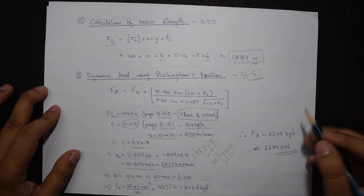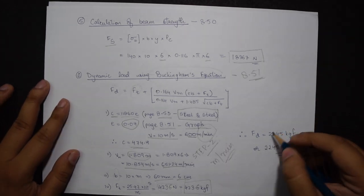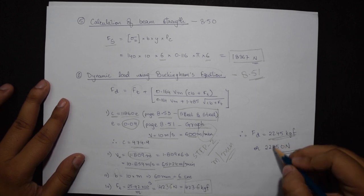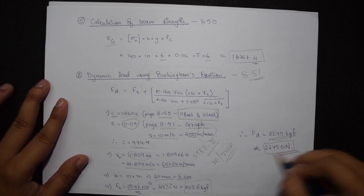Substituting all these values, I'll get my FD or the dynamic load using Buckingham's equation as 2245 kgf, converting it to newtons again, 22,450 newtons.